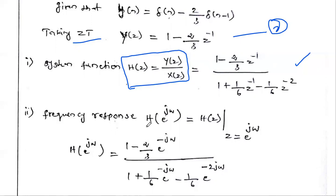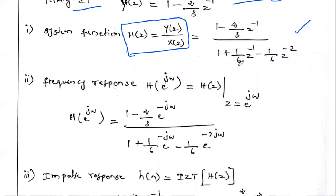Simply, the frequency response H(e^jω) equals H(z) evaluated at z = e^jω. That is, in place of the variable z, if you substitute e^jω, that is the answer for H(e^jω). So in the H(z) equation, just substitute z with e^jω to get the frequency response.